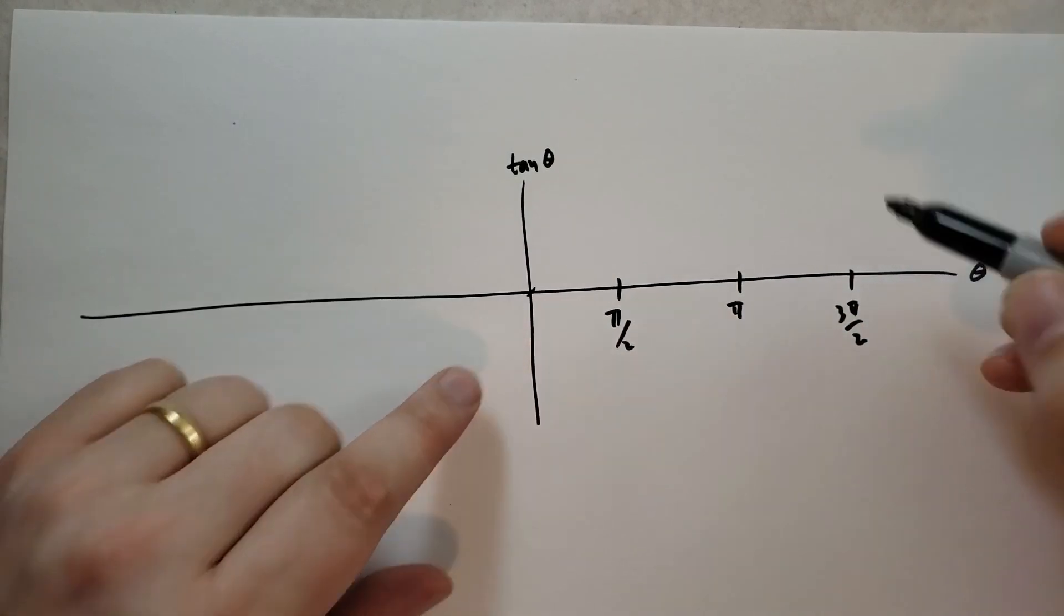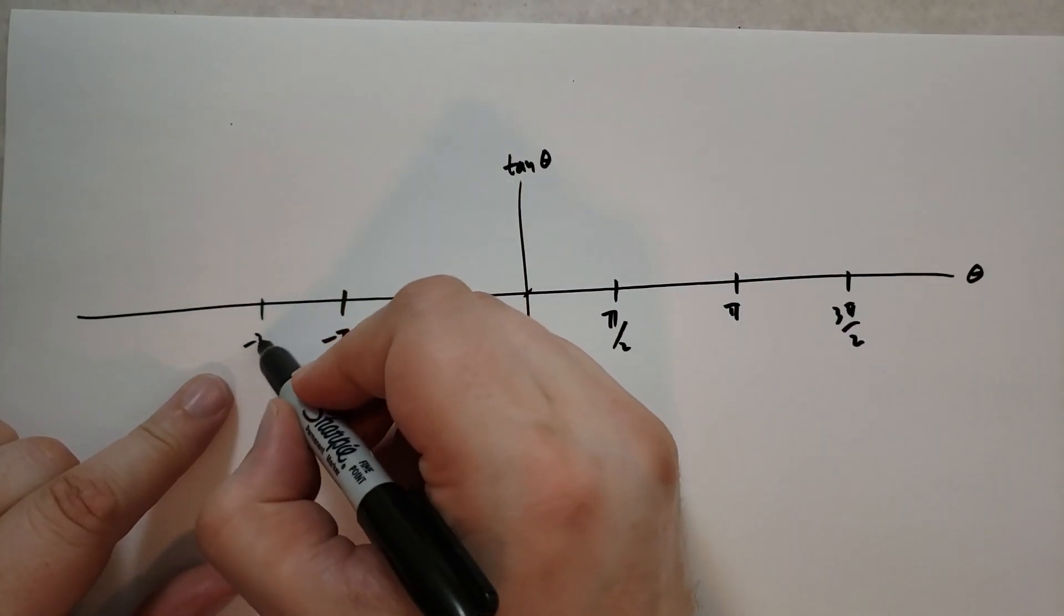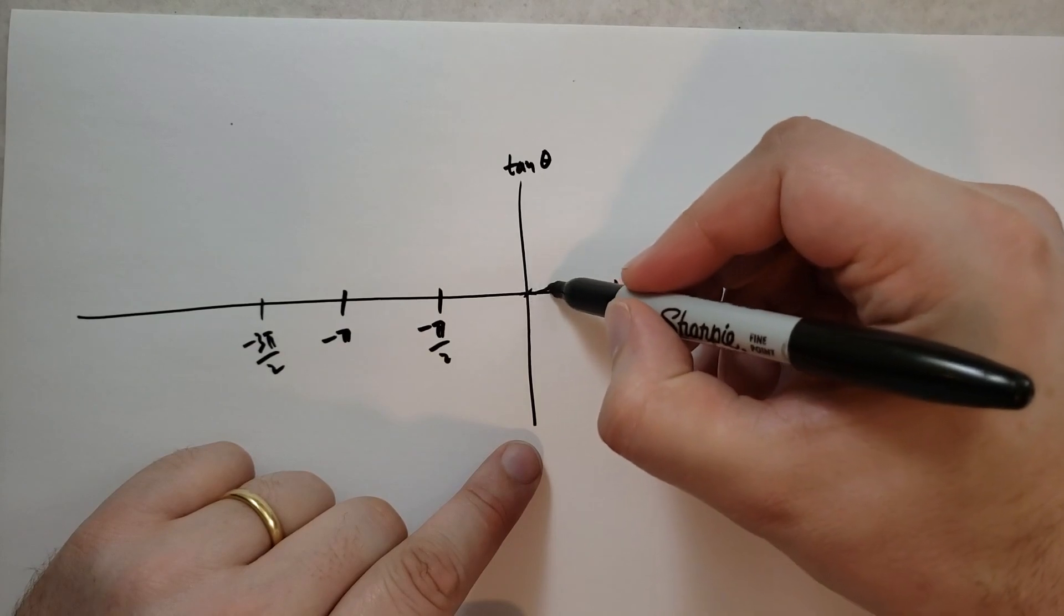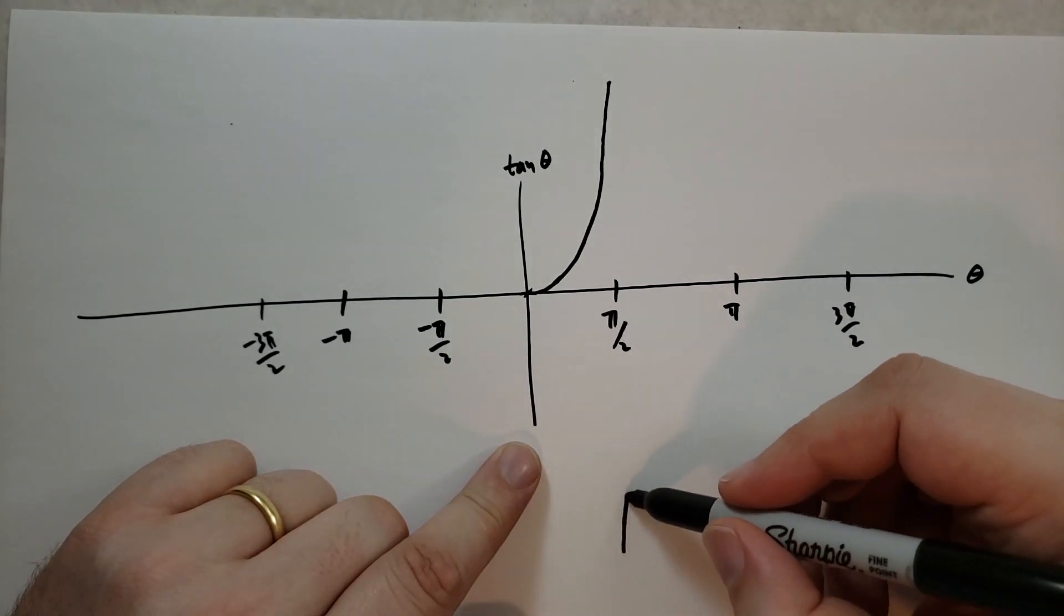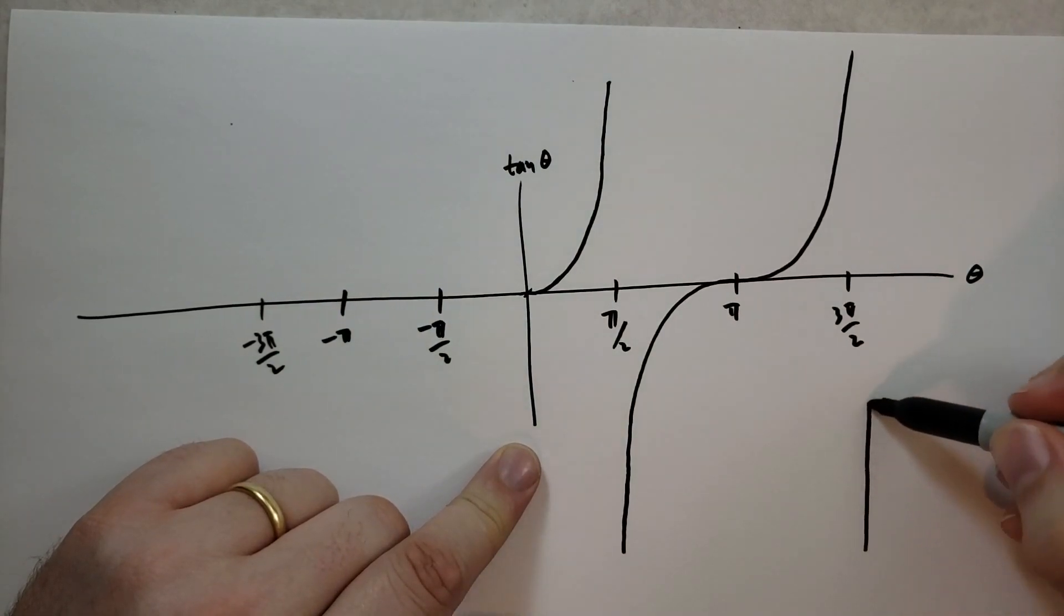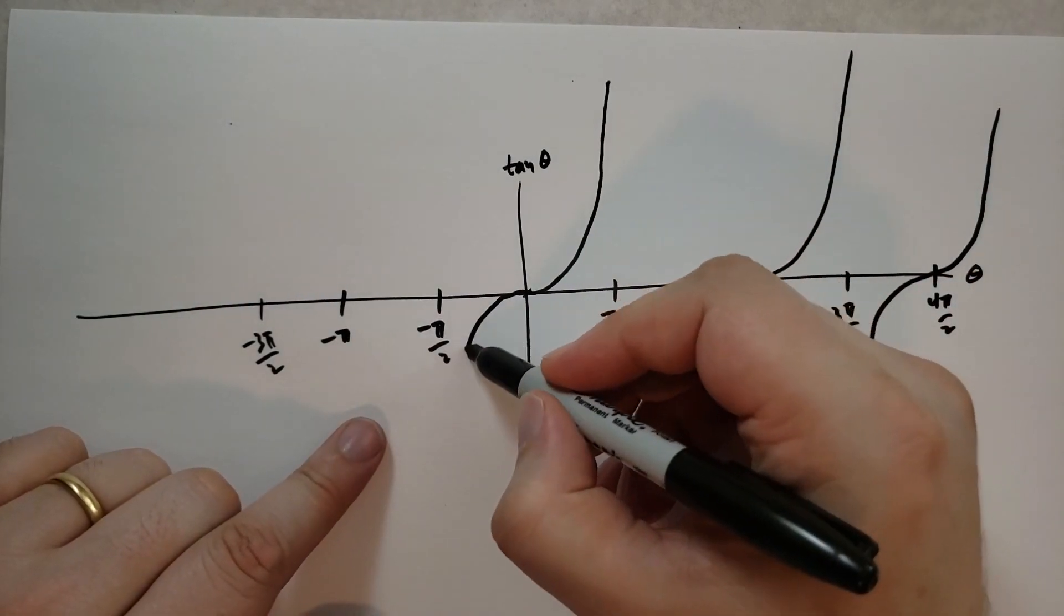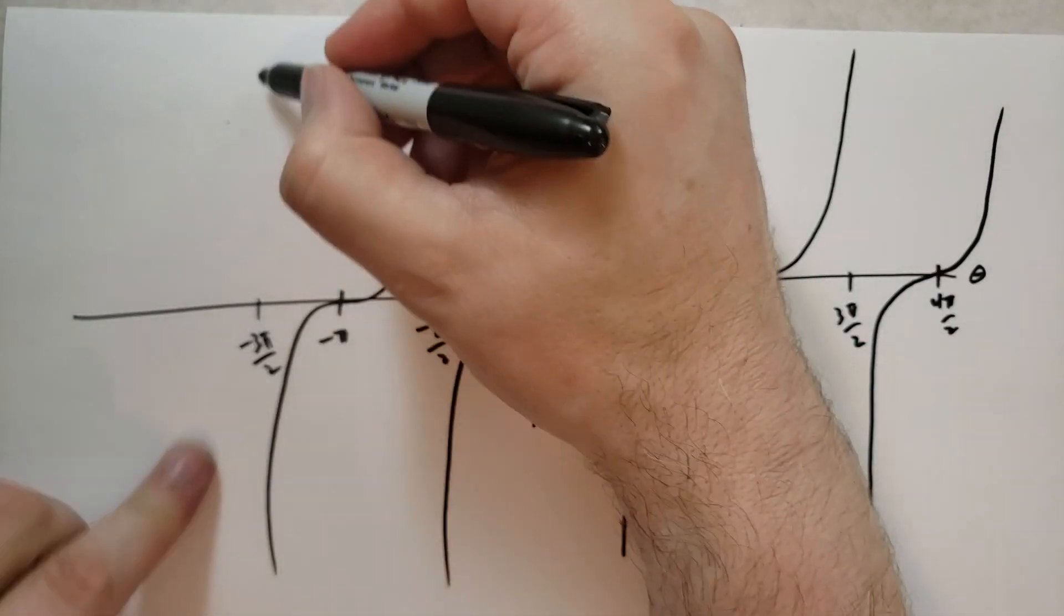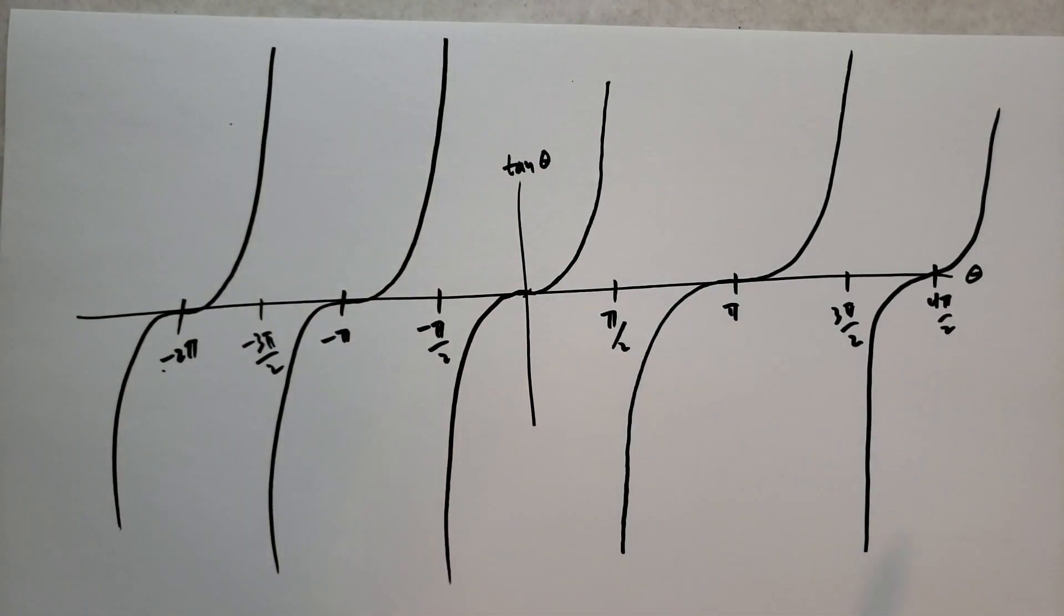And what tangent does is it kind of flattens out here, and then it shoots up, and then it kind of reaches an asymptote at this thing. And then at that point, it comes up, and it shoots up, levels off, and then it shoots up again, like this. And this is what tangent of theta does. This is going to be 4π over 2, or 2π. And this also goes down, and then we start up here, and it comes down, it flattens out, and then it goes down, and it does the same thing over here. This is going to be minus 2π. That's basically what tangent does.